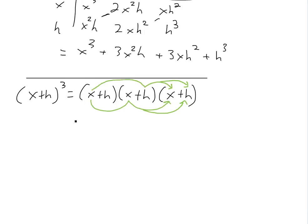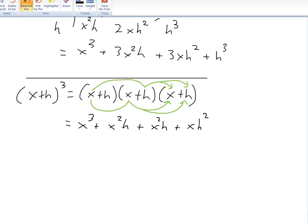So you could write this down as: x times x times x, that's x cubed; plus x times x which is x squared, times h, so x squared h; then plus x times h times x, which is x squared h again; plus x times h times h, so x h squared.